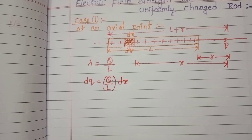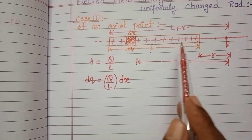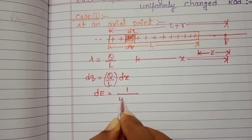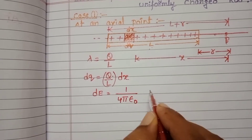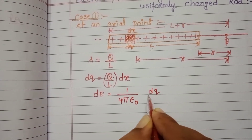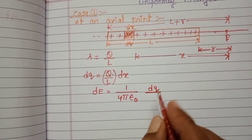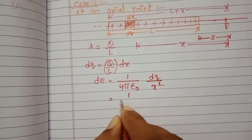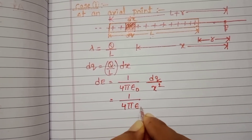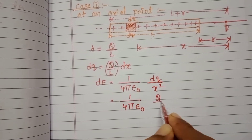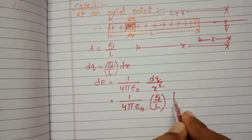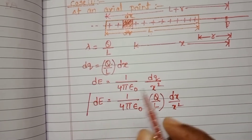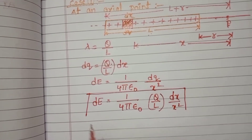The intensity of electric field at point P due to the smallest element is: DE equals 1 by 4 pi epsilon-zero into DQ by X squared. Substituting DQ equals Q by L into DX, we get: DE equals 1 by 4 pi epsilon-zero into Q by L into DX by X squared.